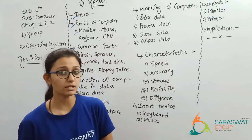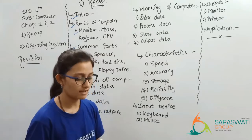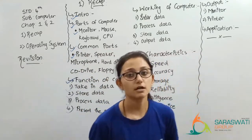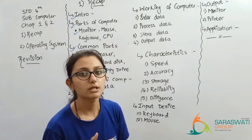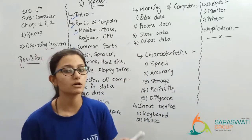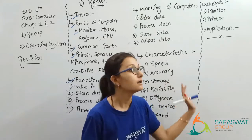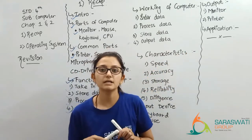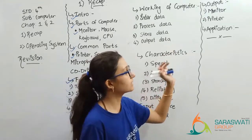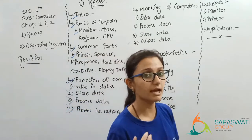Next is input device. Input device means the devices through which we can input data into the computer. Input devices are keyboard and mouse — they help us to input data into the computer. Then output — output devices are monitor and printer. Monitor and printer are our output devices.